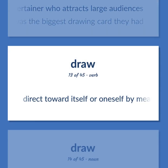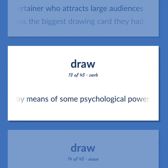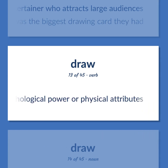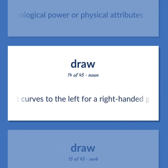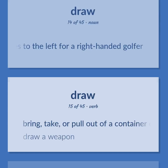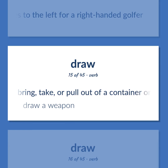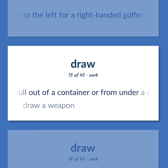Direct toward itself or oneself by means of some psychological power or physical attributes. A golf shot that curves to the left for a right-handed golfer. Bring, take, or pull out of a container or from under a cover. Draw a weapon.